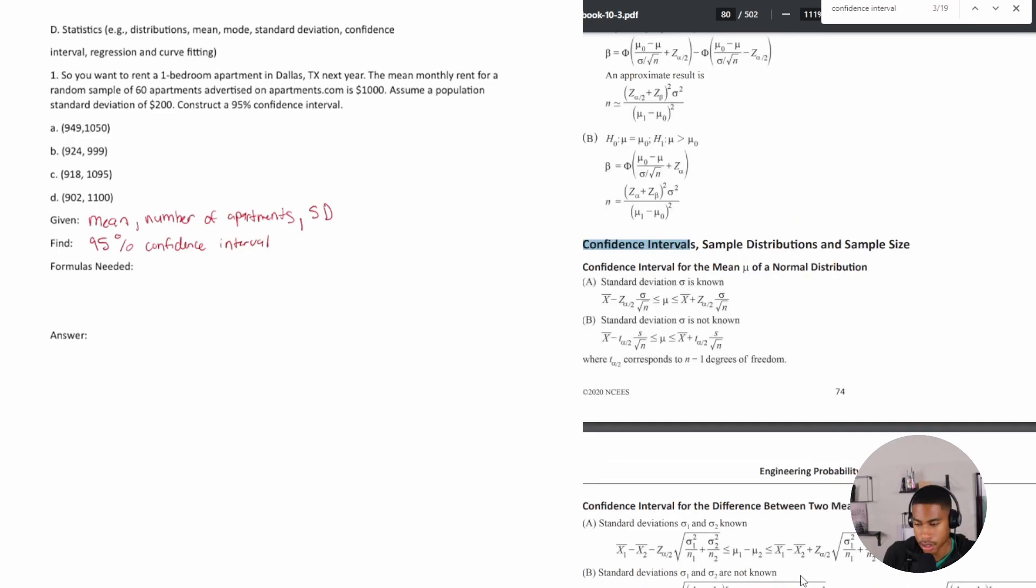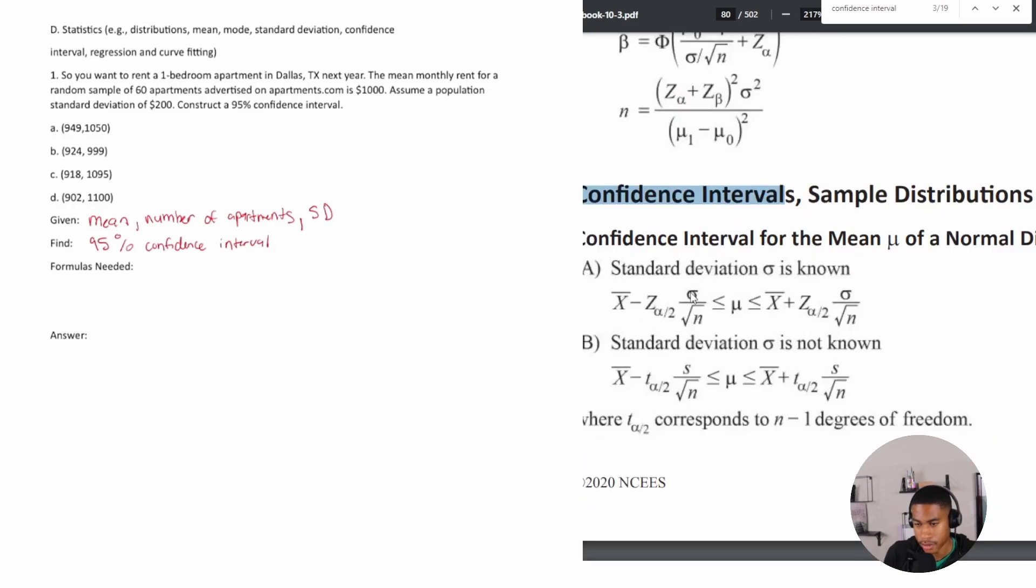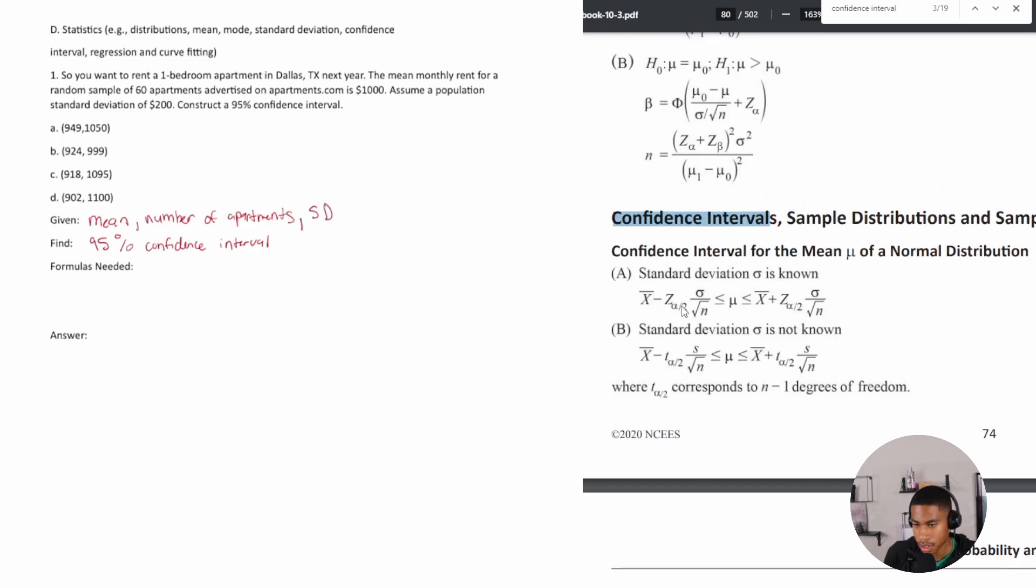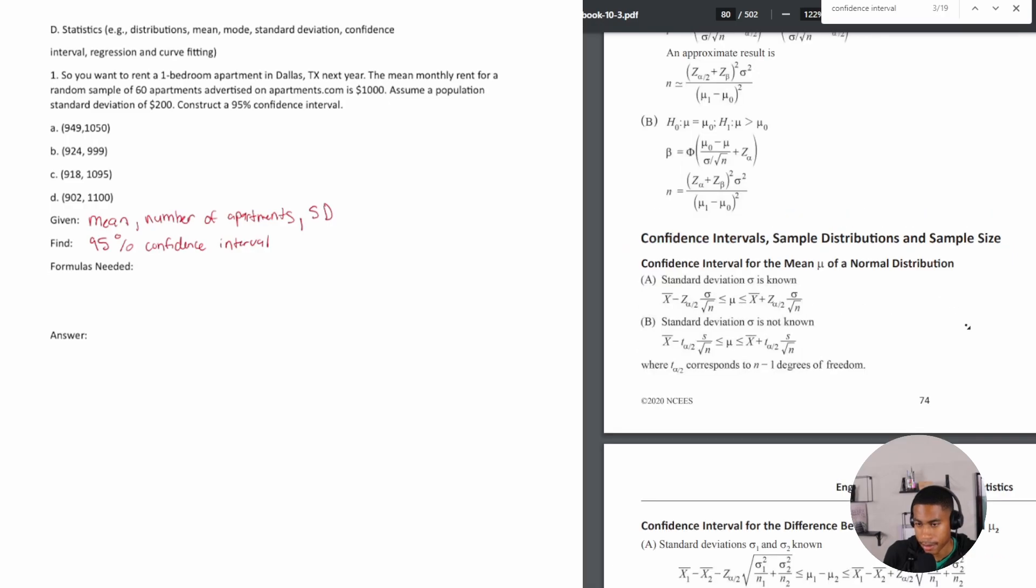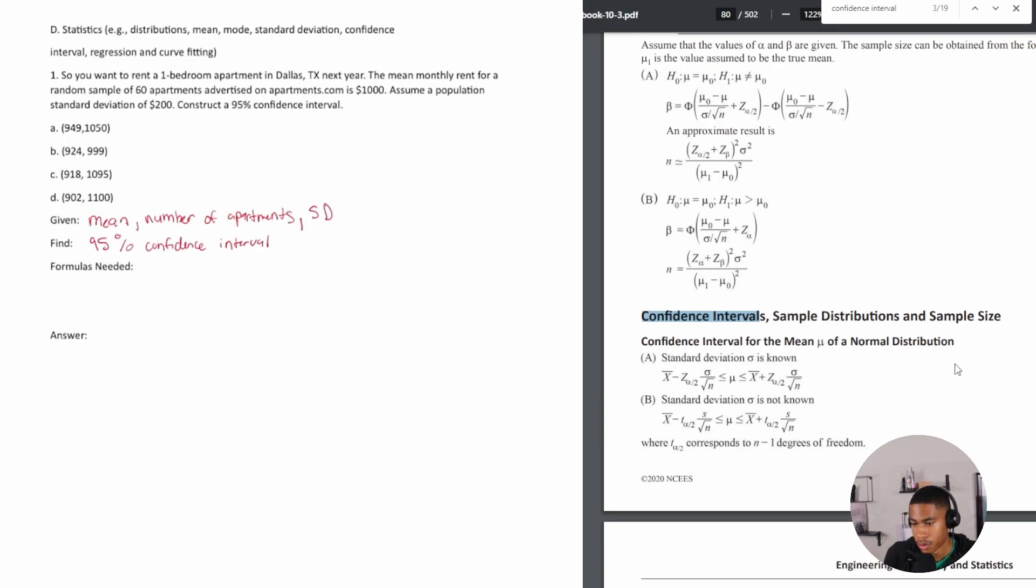I'm getting a little bit warmer. This one says confidence interval for mean of a normal distribution. I do know that the standard deviation is known. X bar represents my mean, and then z alpha divided by 2 I don't know what that is. This symbol represents the standard deviation, and then n is the number of samples. Seems like I have a good amount of variables that I can work with. This is why being able to navigate through this manual is going to be super important.